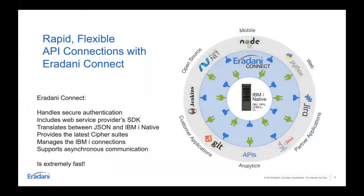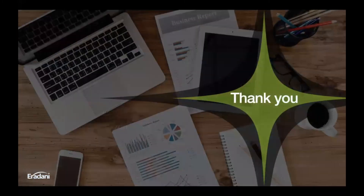Under the covers, Eridani Connect is doing all the work: handling authentication for you and ensuring you're authenticated to the web service. It includes the code from the web service provider — their SDK — to help you call that API appropriately. It does all the translation between JSON and IBMI native, provides the latest cipher suites to ensure your requests won't get rejected, manages IBMI connections, and supports asynchronous operation so that if the web service isn't available, it will queue up those requests and run them later. And it's extremely fast.